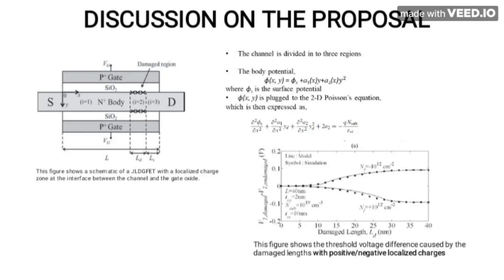Then phi(x,y) is plugged into the 2D Poisson's equation, expressed as: ∂²φ_s/∂x² + (∂²a1/∂x²)·y_d + (∂²a2/∂x²)·y_d² + 2a2 = −qN_sub/ψ_si. The 2D Poisson's equation is mainly used in the analytical development of the model. The graph shows the threshold voltage difference caused by the damaged length with positive and negative localized charge.